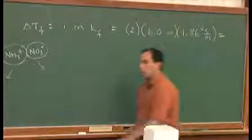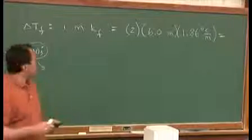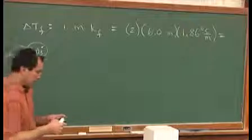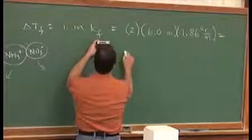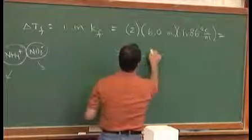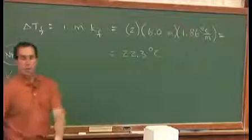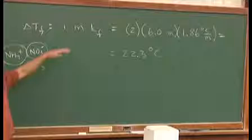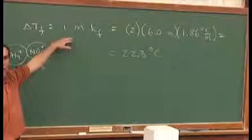Now on my calculator, I'll go ahead and make a quick calculation of 2 times 6 times 1.86, and come up with a value of 22.3 degrees C. Now this is not the freezing point of our new solution. This is what I've changed the freezing point.